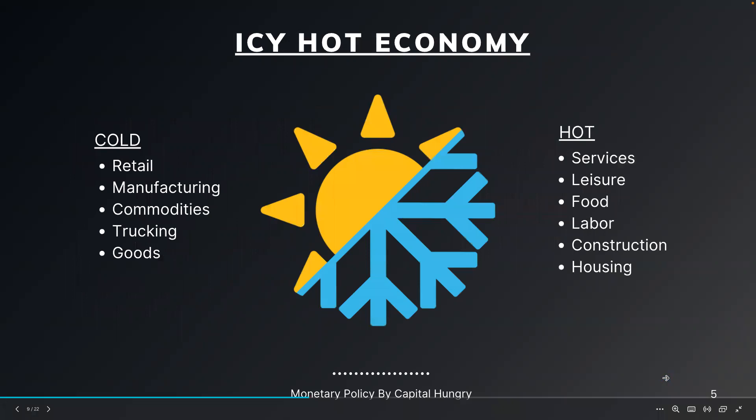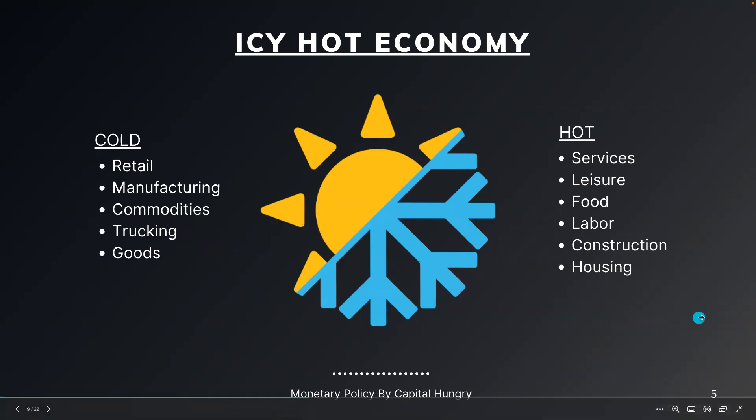The icy hot economy refers to two different parts of the economy. The cold part includes retail, manufacturing, commodities, trucking, and goods — these were the first areas of the economy that felt the heat from rate hikes. The hot part of the economy is where there is still lots of consumer spending and business activity happening, and it remains sticky and hot. This includes services, leisure, food, labor, construction, and housing.